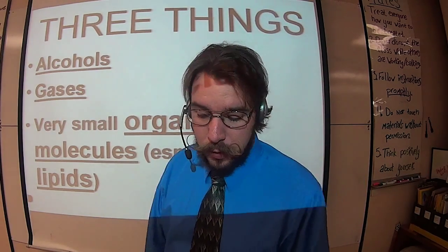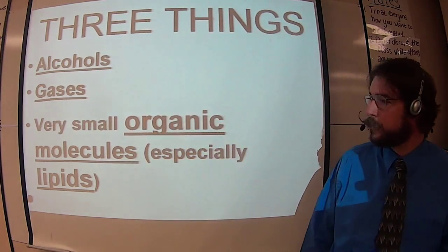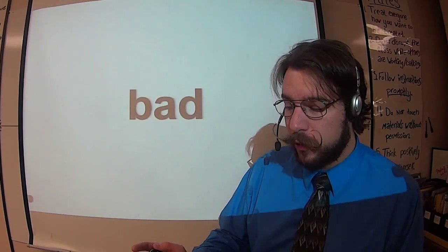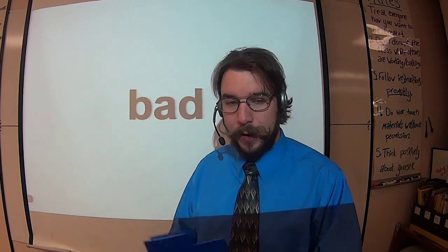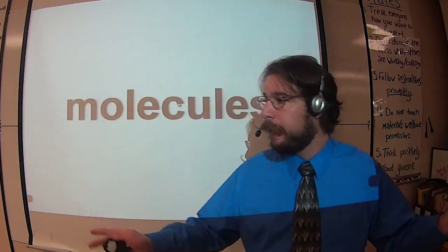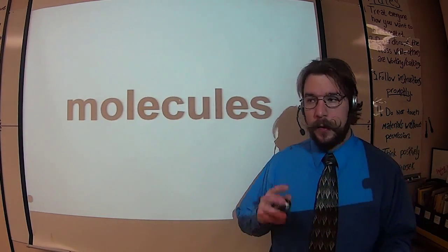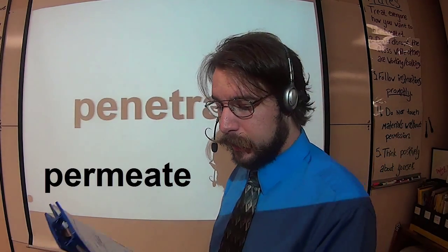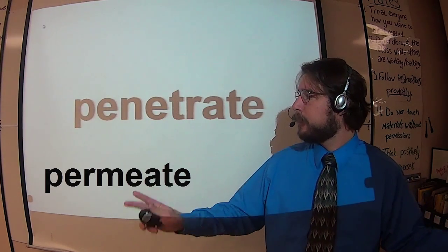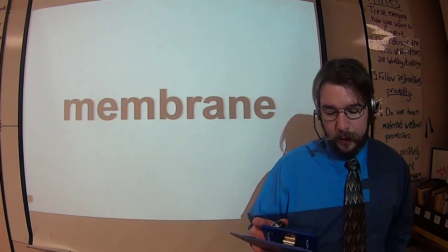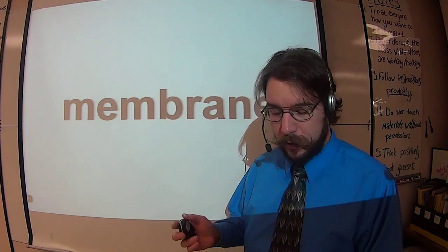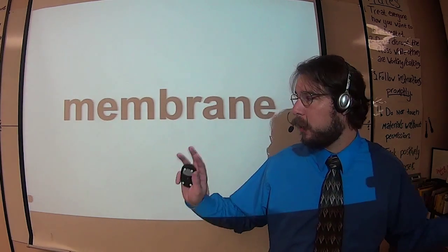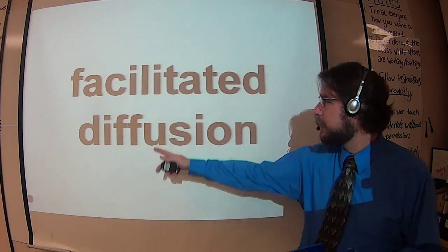However, as we've been discussing, this could be very dangerous for the cell. There are two additional ways in which molecules may permeate the cell membrane. If the object is too large and we're still going to follow the concentration gradient, we could use a helped out form of diffusion. That helped out version is called facilitated diffusion.